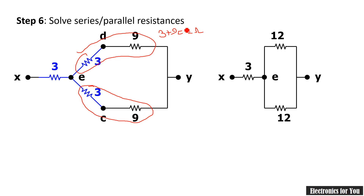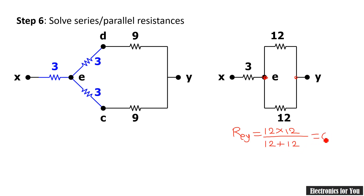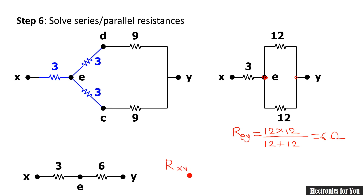Between points E and Y there are now two 12Ω resistances in parallel, since both are connected to the same points E and Y. For parallel combination: numerator = 12 × 12 = 144, denominator = 12 + 12 = 24, giving 6Ω. So between E and Y there is a 6Ω resistance. Finally, Rxy = 3 + 6 = 9Ω. The equivalent resistance between X and Y is 9Ω — this is our answer for the delta-to-star method.